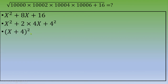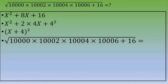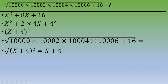So √(10,000 × 10,002 × 10,004 × 10,006 + 16) = √((X + 4)²) = X + 4.